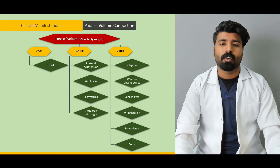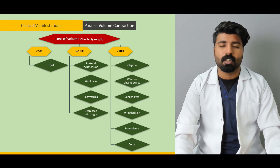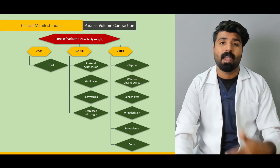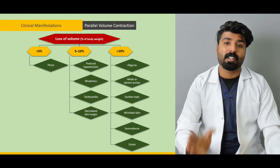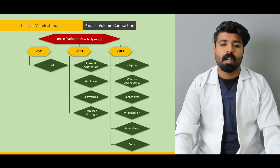Next, we're going to talk about parallel volume contractions, covering the loss of volume in both vomiting and diarrhea. If it's less than 5%, what are the symptoms going to be? If it's between 5% to 10%, what are the symptoms? And if it's more than 10% in a severely dehydrated patient, what will be the clinical manifestations?